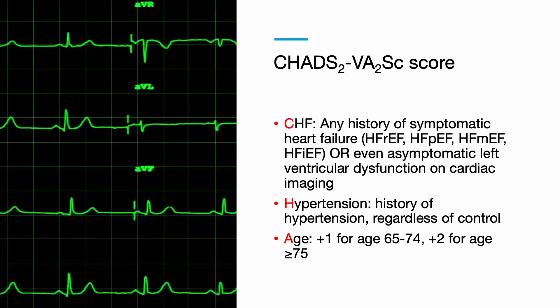The C part of the CHADS-VASc score is CHF. This includes patients with history of symptomatic heart failure or even asymptomatic left ventricle dysfunction on cardiac imaging. H is for hypertension — any history of hypertension regardless if it's controlled or poorly controlled. A is for age: the patient receives a plus 1 if their age is between 65 and 74, and patients over the age of 75 receive a plus 2.